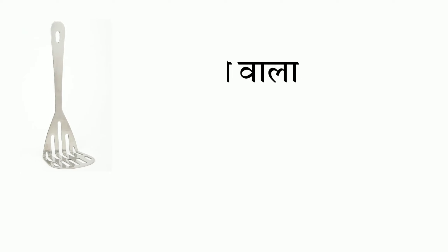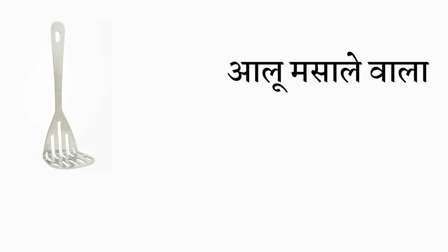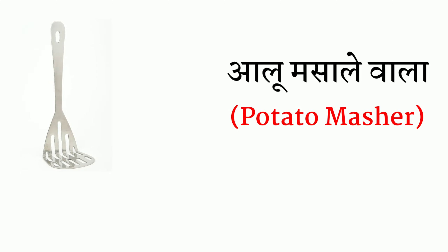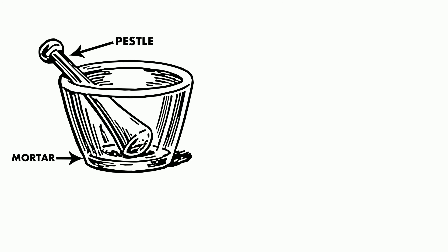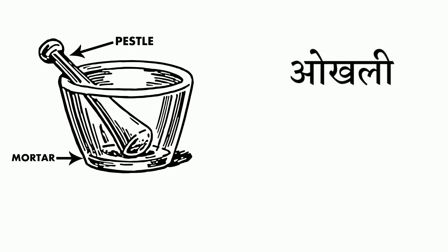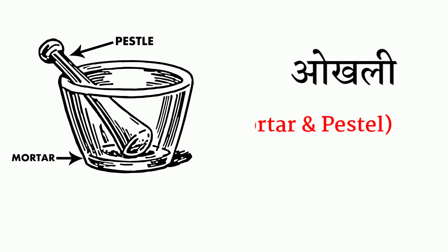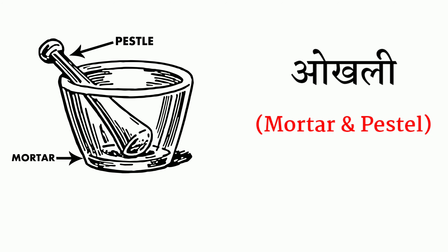Next we have aalu masalne wala — that's called potato masher. And last we have canastar — that's called canister. And also next one we have oakley — that's called mortar and pestle.